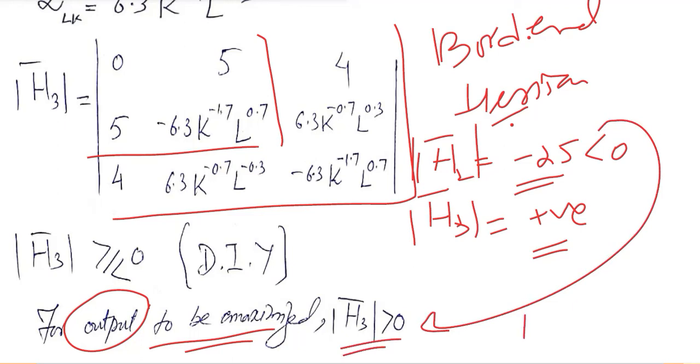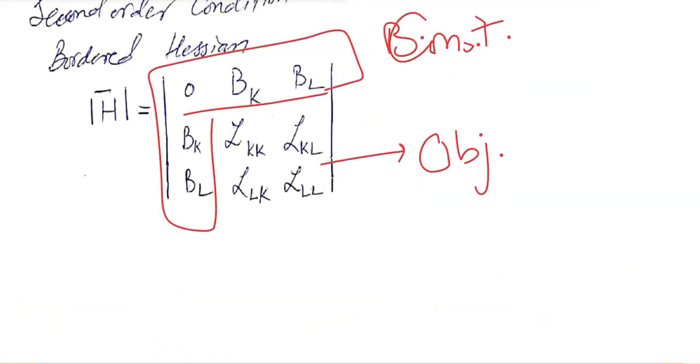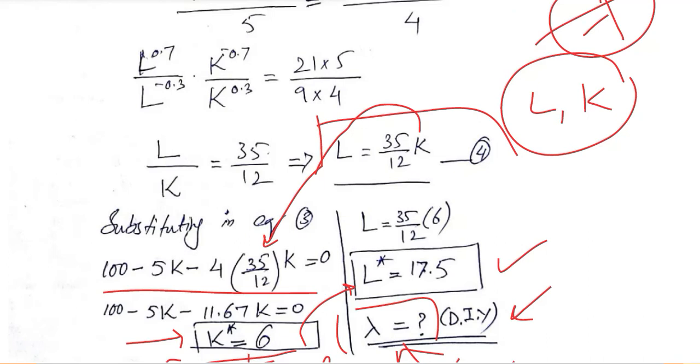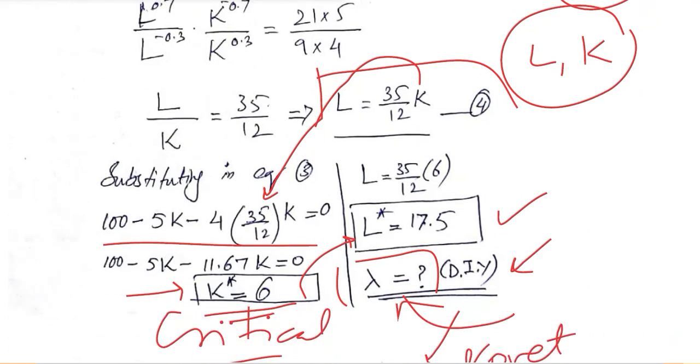This is again DIY for you that you can do. When you get stuck with these labor and capital symbols, you can put the critical values of labor and capital that we have found in the slides above. That is these values, 6 and 17.5. Specifically, we found them here, these values.